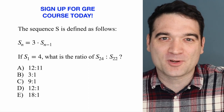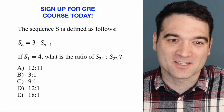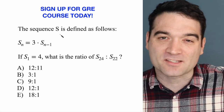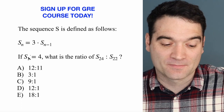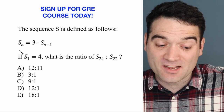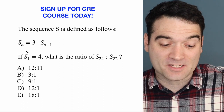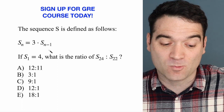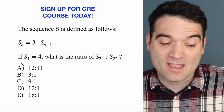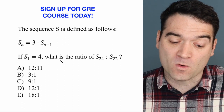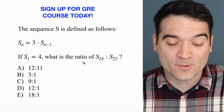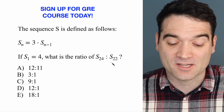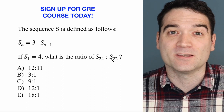Here's a GRE algebra question. The sequence S is defined as follows: S sub n is equal to 3 times S sub n minus 1. If S sub 1 is equal to 4, what is the ratio of S sub 24 to S sub 22?